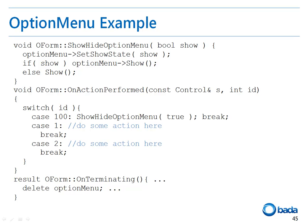In the onActionPerformed function, we can perform the appropriate operations for when the option menu buttons are pressed. It's not necessary to add a function to hide the option menu, because Bada supports a function which hides the option menu by default if a point outside the option menu is touched.